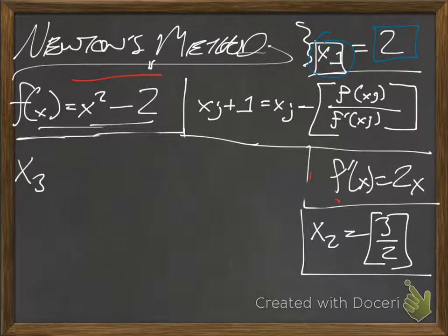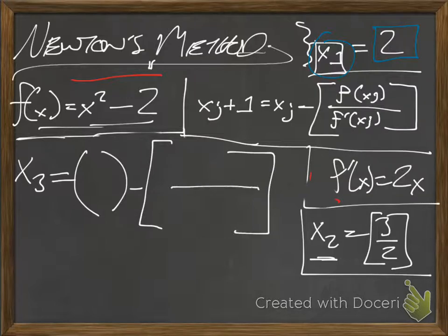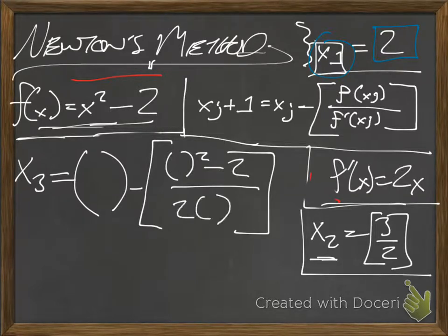So, x₃ is going to be equal to, we're using our x₂ this time for our x_i, so parentheses, once again, let's just stick with that. That's probably the smarter idea. Minus, and we'll draw our rational here again. Then, our f(x) on top, so parentheses squared minus 2, and our f'(x) on the bottom, so 2 parentheses.